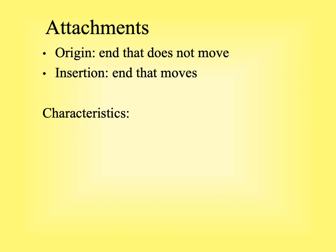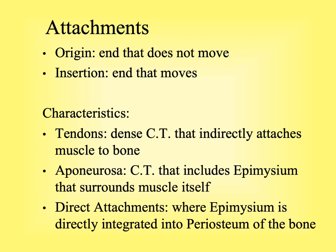Attachments have distinct names based on how connective tissues connect. Tendons are dense connective tissue that indirectly attach muscle to bone — coming away from the epimysium through the fascial plane and attaching to the periosteum of the bone; tendons tend to be long relative to other attachment types. The aponeurosis is an attachment where the connective tissue includes both the epimysium and perimysium within it, and is elongated relative to the direct attachment. In a direct attachment, we cannot identify a tendon — the epimysium integrates directly into the periosteum of the bone.